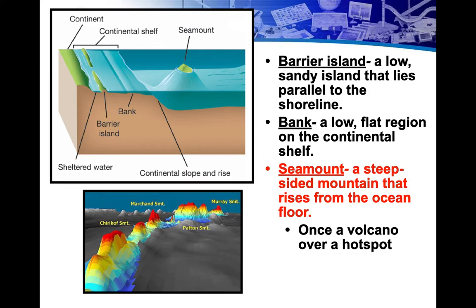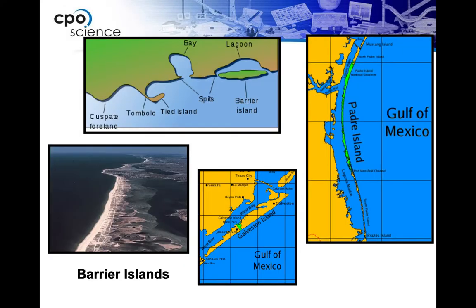Seamounts are steep-sided mountains rising up from the ocean floor. They were once volcanoes erupting magma at a hot spot on the ocean floor. As the tectonic plate moved, the volcano became dormant, and you often see seamounts in a chain. They're essentially V-shaped — very steep-sided — rising from the ocean bottom.